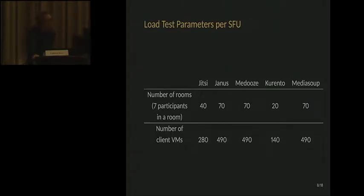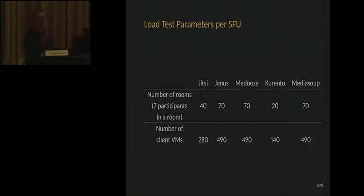The target was to reach 70 rooms, with each media server managing 70 rooms and seven participants per room — that's 490 participants. It turned out that two of the media servers were not able to handle that load. For Jitsi and Kurento, we set a lower limit because, as you will see, they were not able to reach 70 rooms.